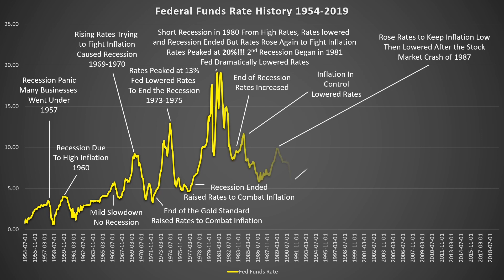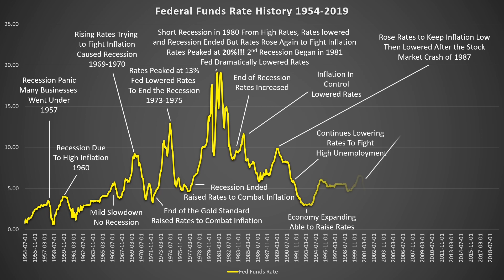The Fed dramatically lowered rates again. When the recession ended, rates were raised but started decreasing when inflation was in control. Rates rose again in 1987 to keep inflation low, but were lowered shortly after the stock market crash of 1987. The Fed continued to lower rates in the early 1990s to fight high unemployment. In 1993, with the economy growing, the Fed was able to raise rates again.